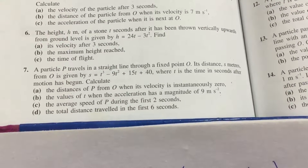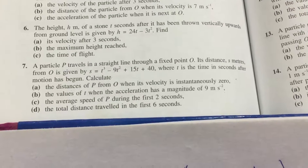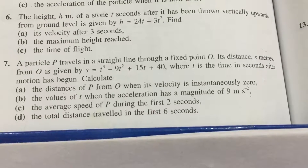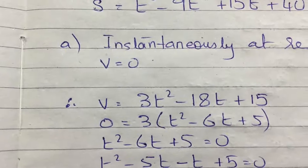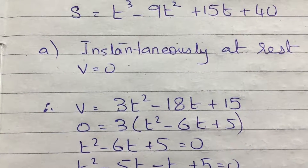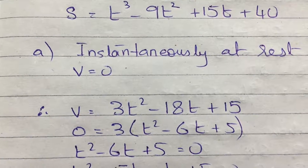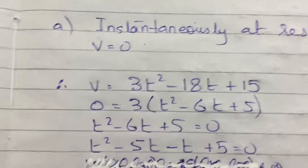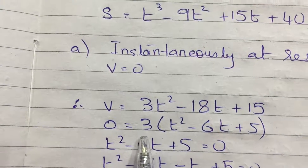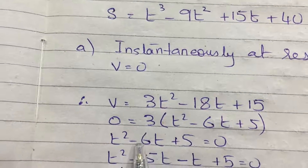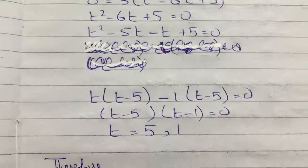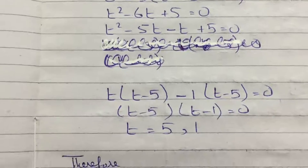In the first part we have to find the distance of the particle from the origin when velocity is instantaneously zero. I will put v equals to zero, find the velocity equation by differentiating the displacement equation, and then find the value of t. I factorized by taking three as a common factor to simplify the equation, and found t equals to five and one.